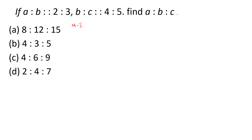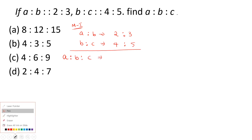Method 1: To get A:B:C, just write A:B as given, that is 2:3, and B:C as given, that is 4:5. To get A, multiply 2 with 4, that gives us 8. To get B, multiply 3 with 4, that gives us 12. To get C, multiply 3 with 5, that gives us 15. So A:B:C is 8:12:15.